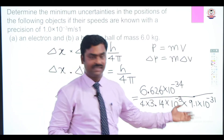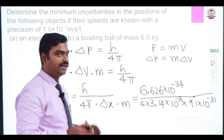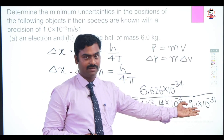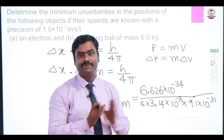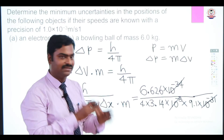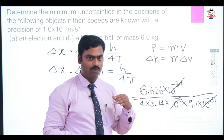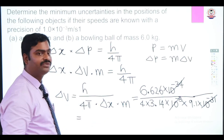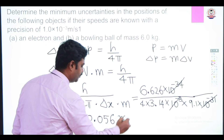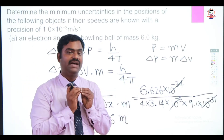In the denominator, we have 10⁻³ and 10⁻³¹. Multiplying them gives 10⁻³⁴, which cancels with 10⁻³⁴ in the numerator. The remaining values are 6.626 divided by (4 × 3.14 × 9.1), giving a final value of approximately 0.056 meters per second. So the error in velocity for an electron is very large.